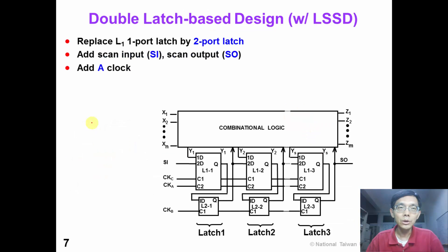This slide shows the same double latch-based design after LSSD insertion. In this figure, please note that we replace L1 master latch by a two-port latch, which has one additional scan input, and also this circuit has one additional scan output. In this circuit, we insert a scan chain that connects these three latches in serial. We also add clock A into this circuit.